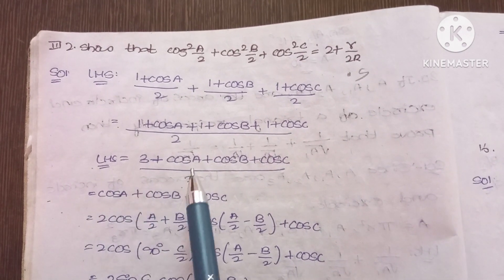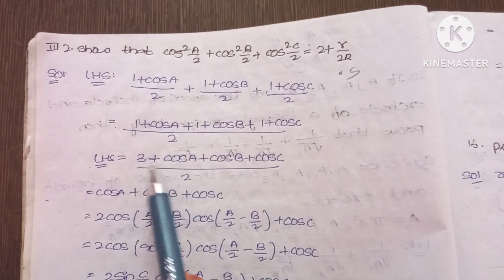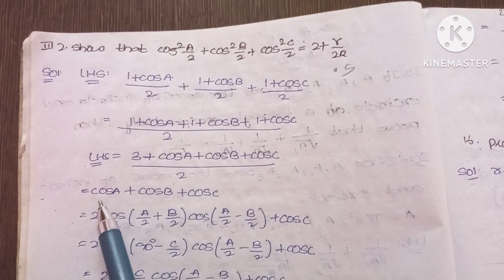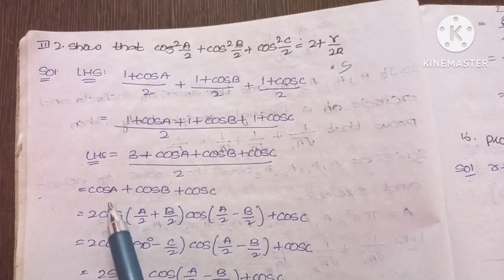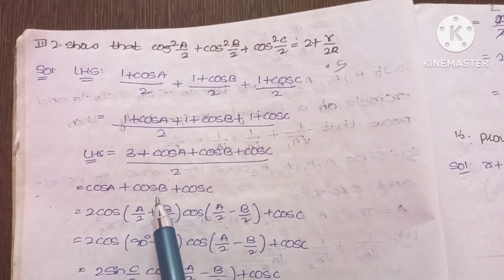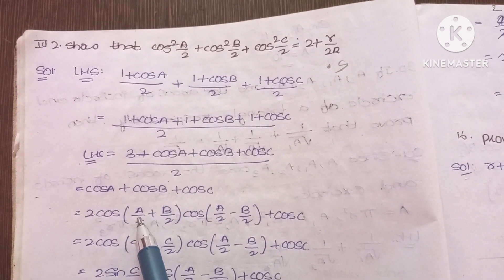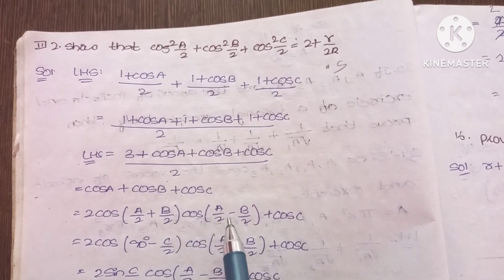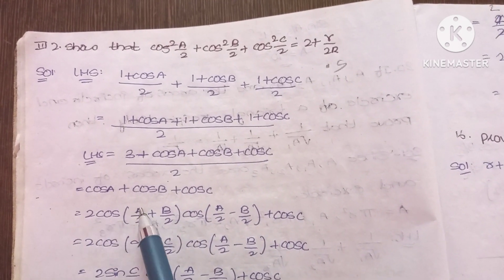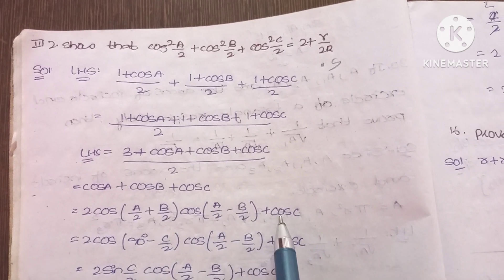Now we solve the term cosA + cosB + cosC. The formula gives us 2cos((A+B)/2)cos((A-B)/2) + cosC. We note that (A+B)/2 = 90° - C/2, so cos((A+B)/2) = sin(C/2).